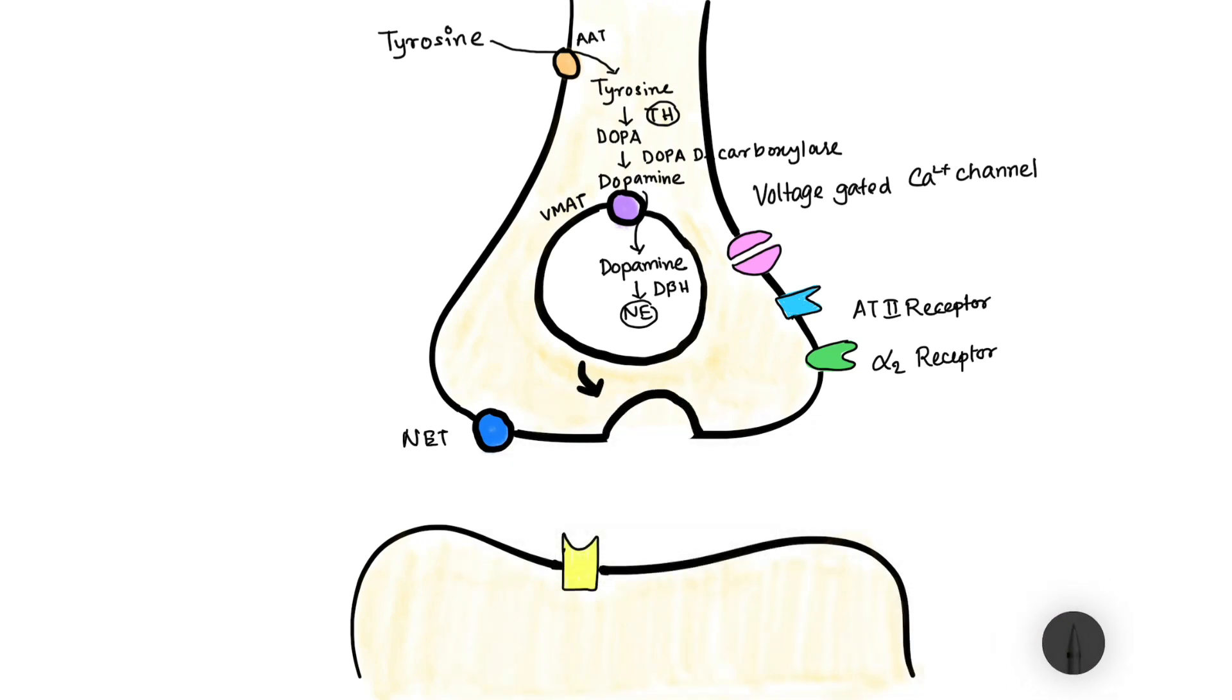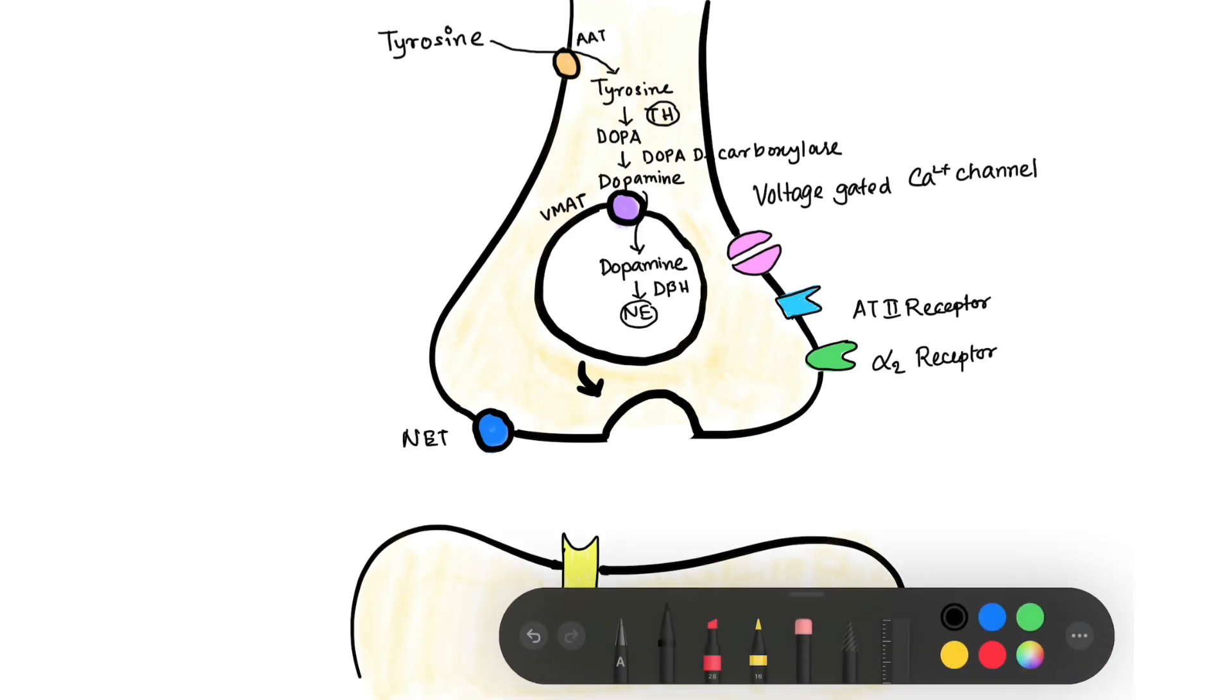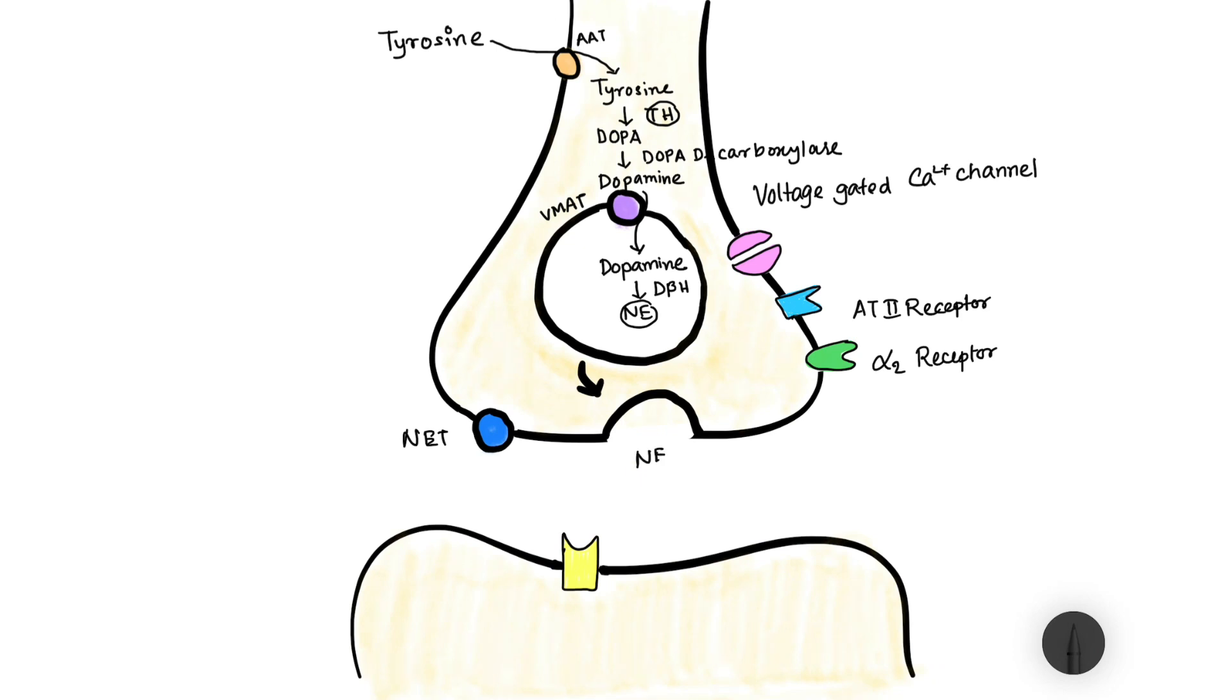So this vesicle goes on and fuses with the membrane of the presynaptic neuron and finally leads to release of this norepinephrine into the synaptic cleft.